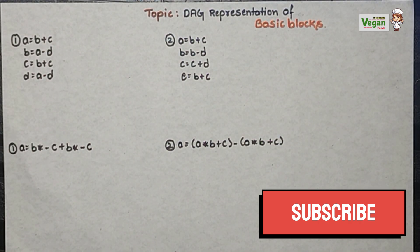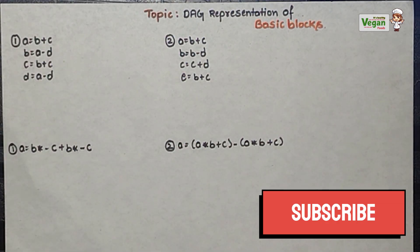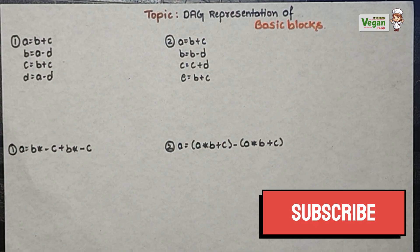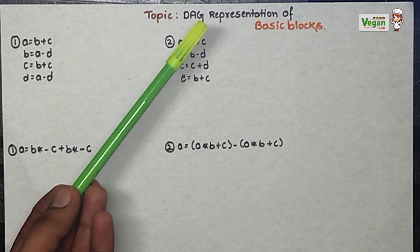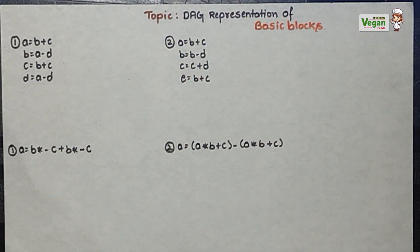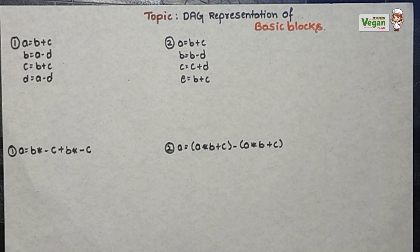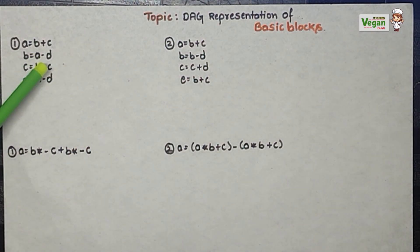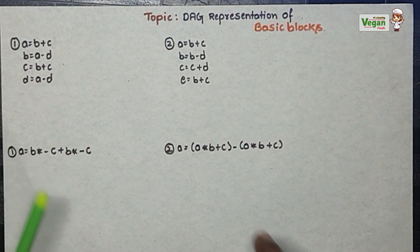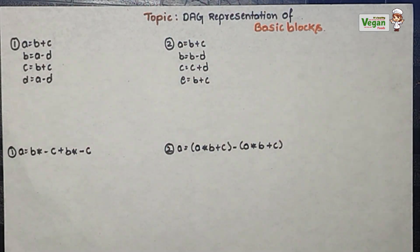Hello everyone. In this video let's discuss the DAG representation of basic blocks. If you are new to our channel please subscribe for more engineering related topics. DAG is the directed acyclic graph representation of the basic block. We are having two types of problems, so let's discuss both of them using two examples so that you can solve every related problem.